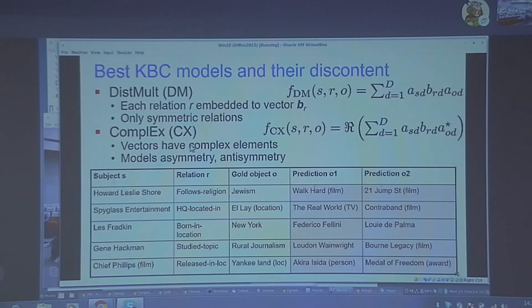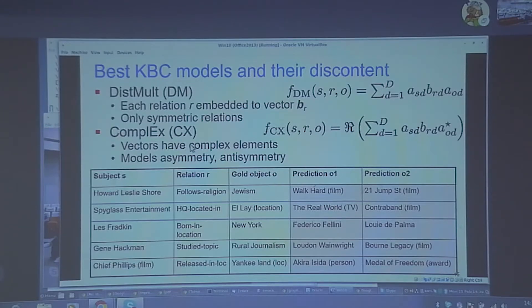This was fixed by the ComplEx model, where S, R, and O are embedded to complex vectors, and in the three-way dot product the AO vector is conjugated. Taking the complex conjugate of the AO vector leads to valuable asymmetry — it can automatically fit anti-symmetric relations as well. ComplEx and DistMult are pretty good; ComplEx is better for asymmetric and anti-symmetric relations. However, they do fail, and when they fail, crazy things happen. If the subject is Howard Leslie Shore and the relation is 'follows religion' with gold object Judaism, the predictions from these models are movies. Or Les Fratkin was 'born in location' New York but the predictions are people.